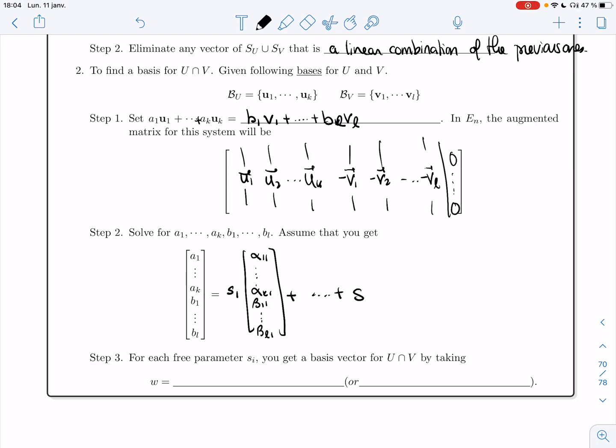And for parameter sr, you have (α₁,ᵣ, ..., αₖ,ᵣ, β₁,ᵣ, ..., βₗ,ᵣ). So we have all of these parameters s1 through sr in R.